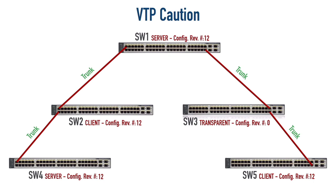Now let's talk about the caution where we might accidentally overwrite the VLAN database on all our switches. In this topology, once we reach a steady state, every switch — except transparent mode switches — will agree on the VLAN database and share the same configuration revision number. So if I go to SW1 and create a new VLAN, that increments the revision number from 12 to 13. When that advertisement reaches switches SW2, SW4, and SW5 — they see revision 13, which is more authoritative than their revision 12, and update their databases. A transparent mode switch has a configuration revision number of zero. Now imagine this scenario: a brand new switch that you've been testing — trying out quality of service features, adding, deleting, and modifying VLANs.